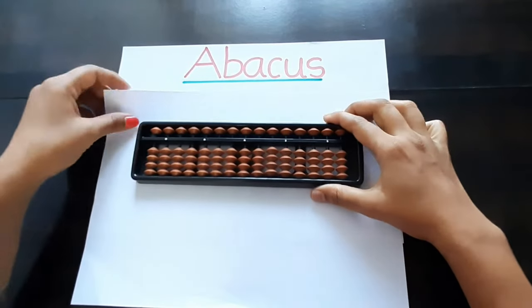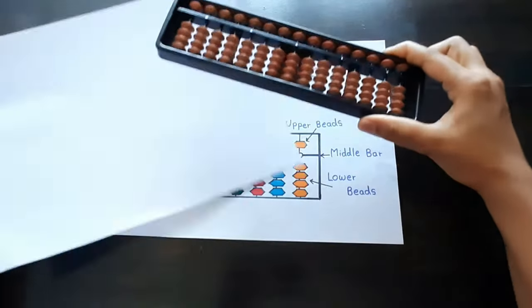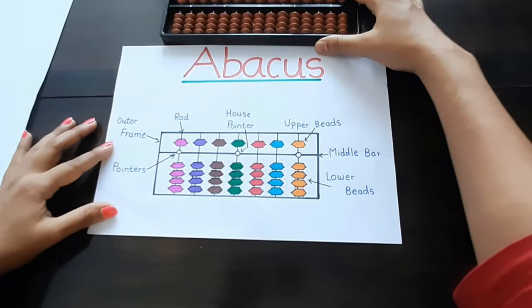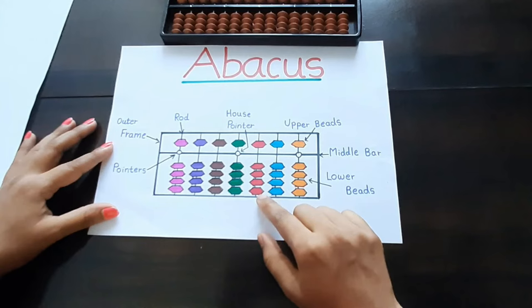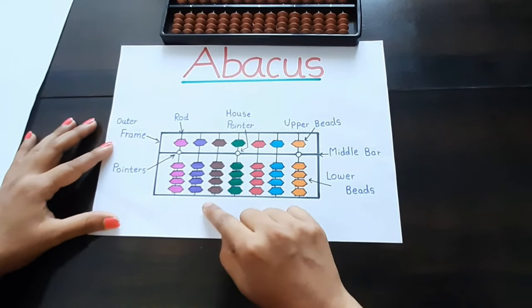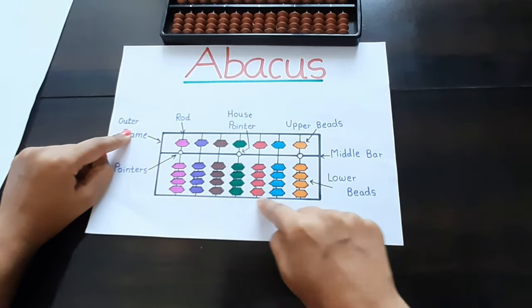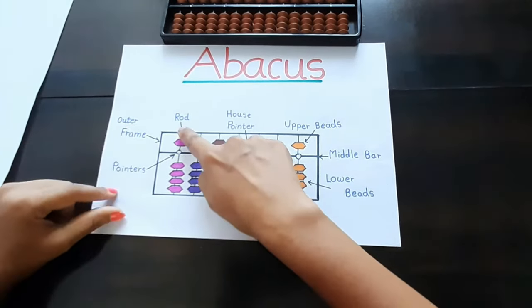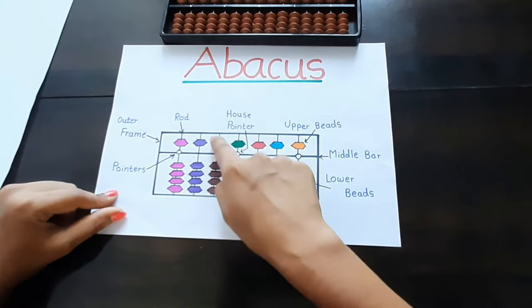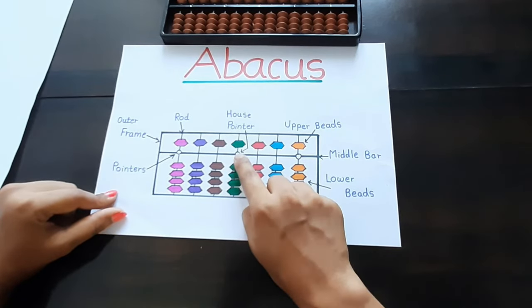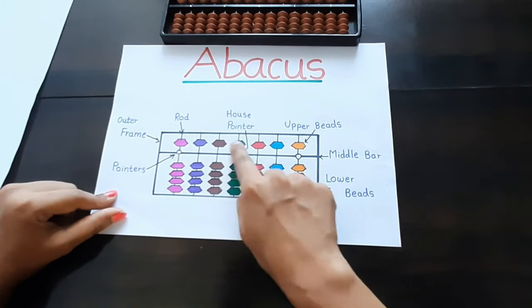Now we will see the label diagram of abacus. This is the outer frame, these are vertical rods, this is the house pointer — the middle white point is the house pointer — and these are upper beads.